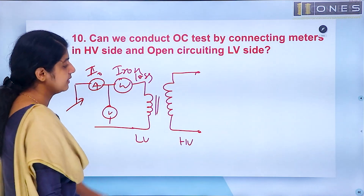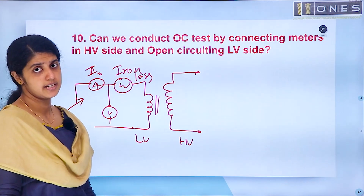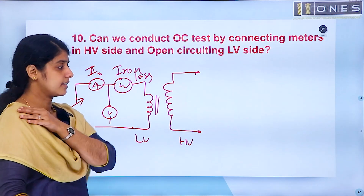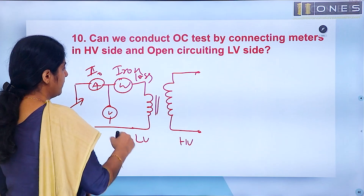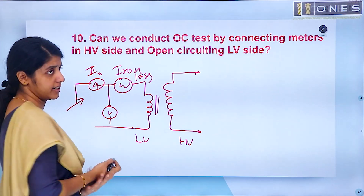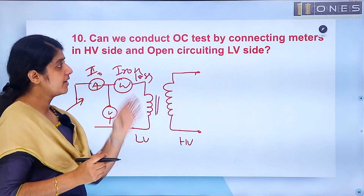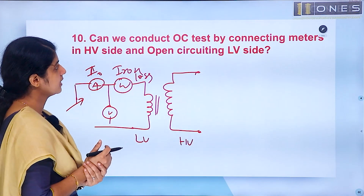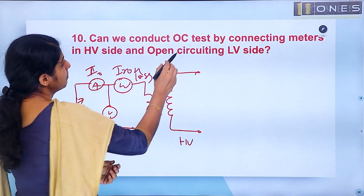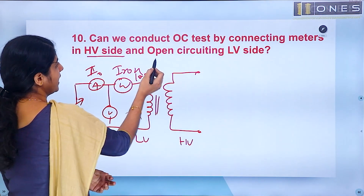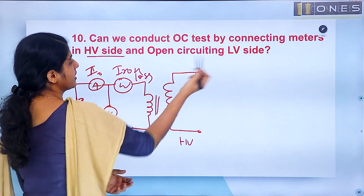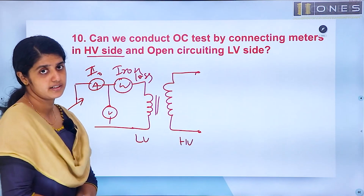Normally, we open the HV side and connect the LV side to the meters. Now the question is: what about connecting meters on the HV side and open circuiting the LV side instead?